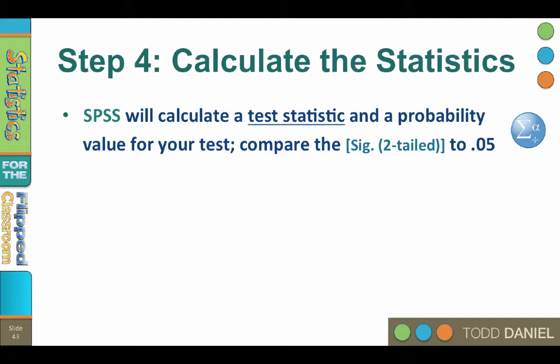In SPSS, the probability value will be in a box labeled SIG for significance. Look at the value in the SIG box. That is your p-value. Is it less than 0.05? If so, the difference is statistically significant and you would reject the null.